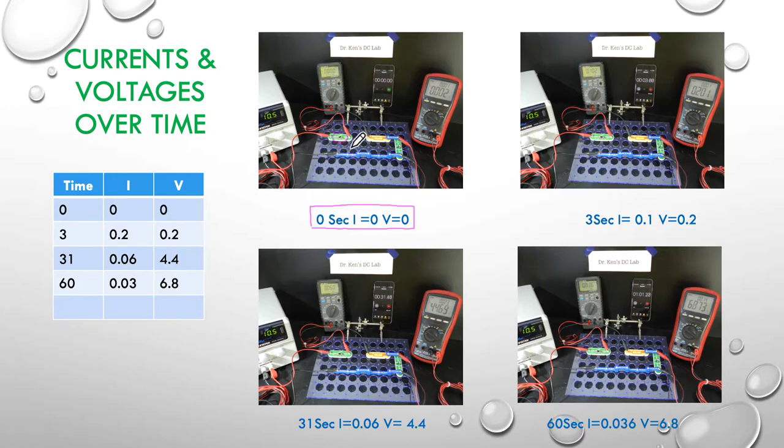So we're still open here. There's no current, no time and no voltage. Then next I close the switch and I quickly jump to my camera and take a picture, which best I could do is three seconds. So at three seconds, our current is at 0.1 of a milliamp and our voltage is at 0.2 of a volt. You can see that clearly on the displays.